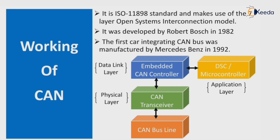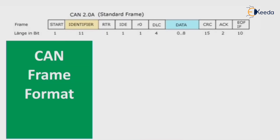This is the actual working model of the CAN bus. Let's see the frame format of CAN, which includes: Start of Frame, Identifier, RTR, IDE, R0, DLC, Data, Cyclic Redundancy Check (CRC), Acknowledge (ACK), and End of Frame.